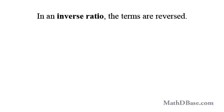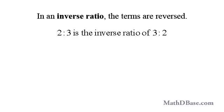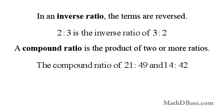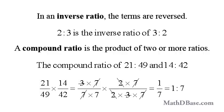An inverse ratio is the ratio in which the terms have been reversed; for example, 2 to 3 is the inverse ratio of 3 to 2. A compound ratio is the product of two or more ratios. The compound ratio of 21 to 49 and 14 to 42 is 21/49 × 14/42, which reduces to 1 over 7, or 1 to 7.